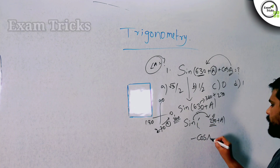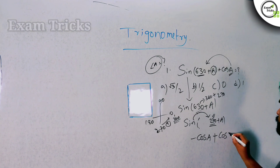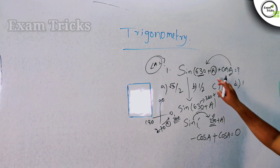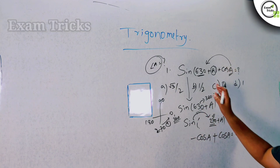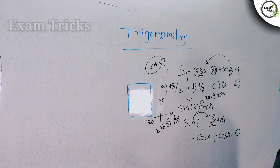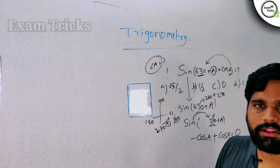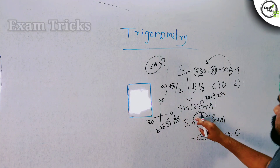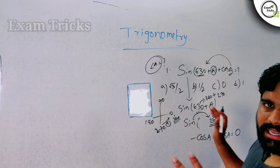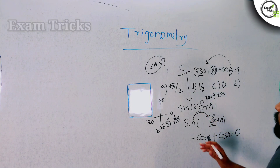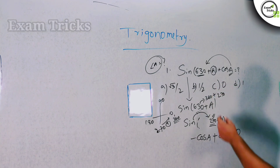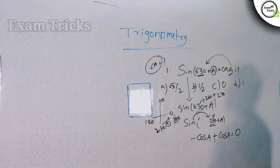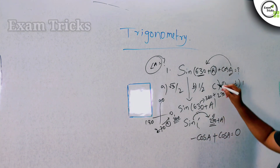Now, sin(270 + A) equals minus cos(A). So the expression becomes: minus cos(A) plus cos(A), which equals 0. The answer is option (c), which is 0.